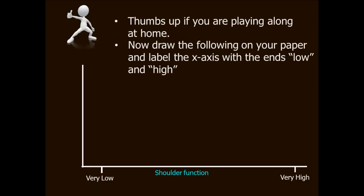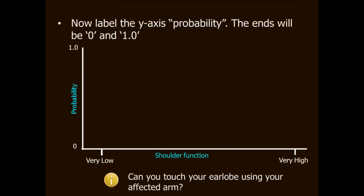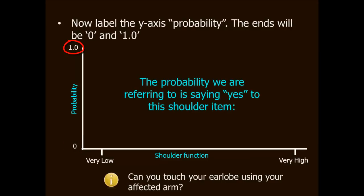So what I would like for you to do now is to draw what you see here. Label the x-axis shoulder function and put ticks on it that correspond to very low and very high shoulder function. Label the y-axis, the axis related to probability, with tick marks at the bottom and at the top for 0 and 1 - 0 being no chance and 1 being perfect probability. The probability that we are going to be representing in this graph is the probability of saying yes to the item: can you touch your earlobe using your affected arm.